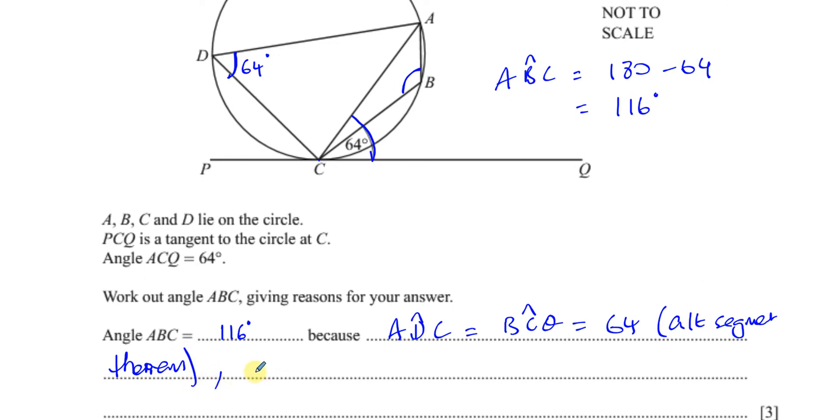And also, you can say that angle ABC plus angle ADC add up to 180 degrees. Why? Because they are opposite angles in a cyclic quadrilateral. Okay, so that's basically the reasoning behind it.